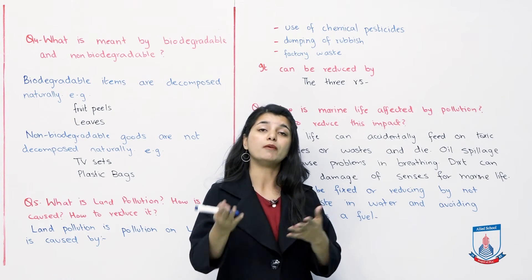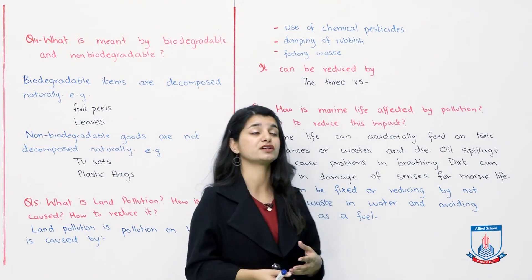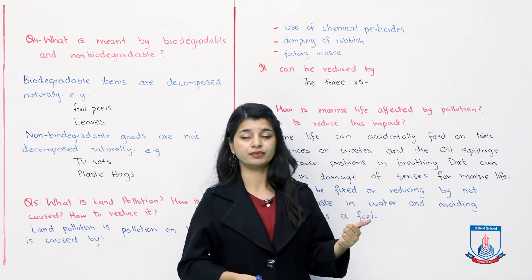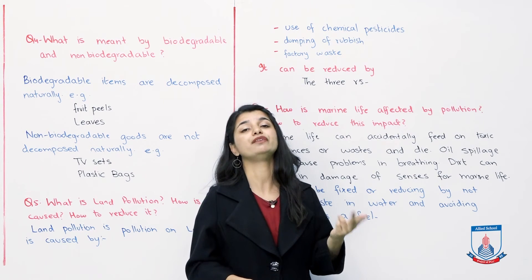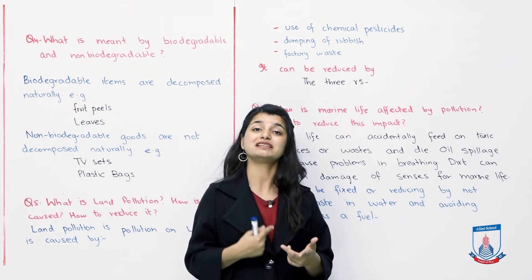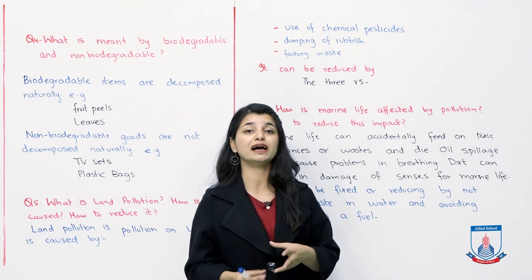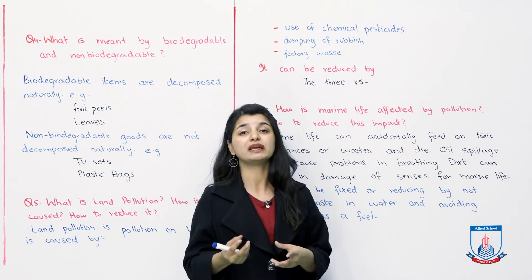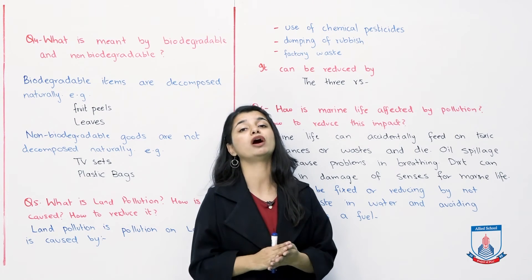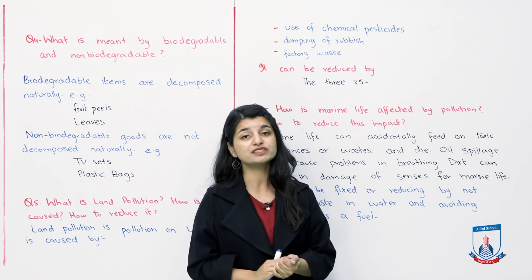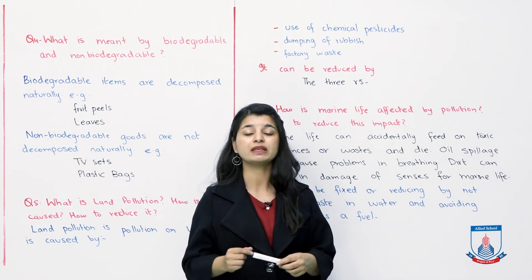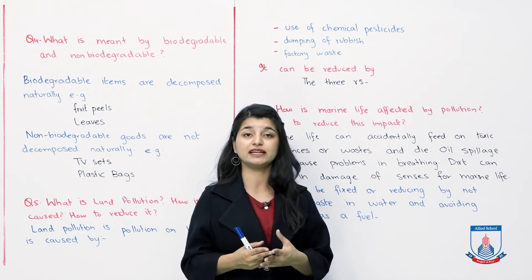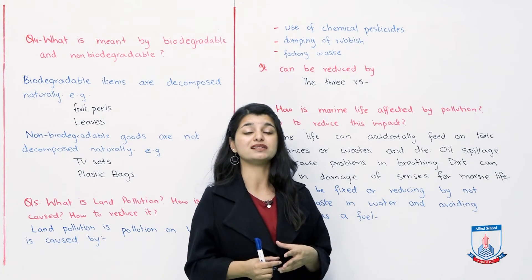To reduce land pollution, you obviously address and control its causes. The simple answer is it can be reduced by the three R's: reduce, reuse, and recycle. We also discussed a whole lecture on reducing land pollution — you can revisit it and add a lot more to your answer.